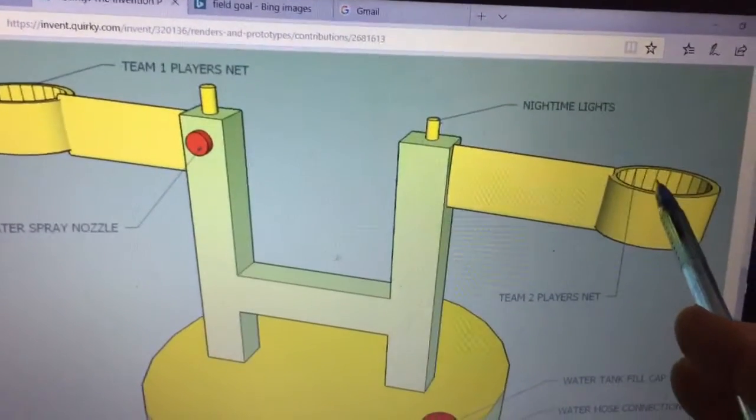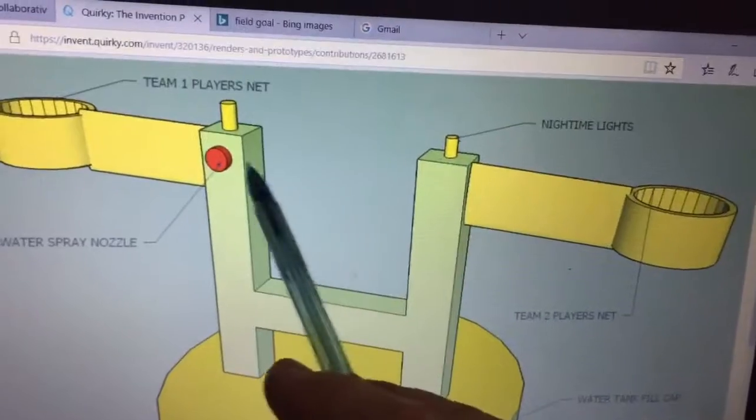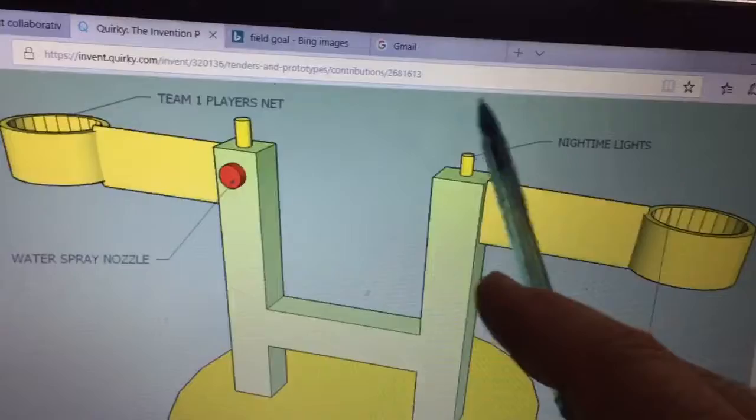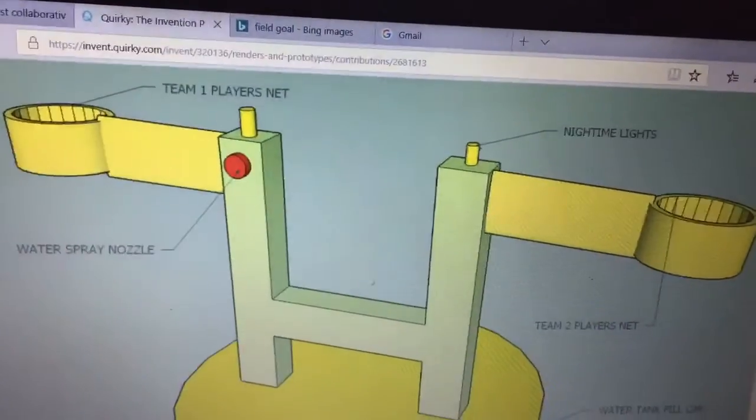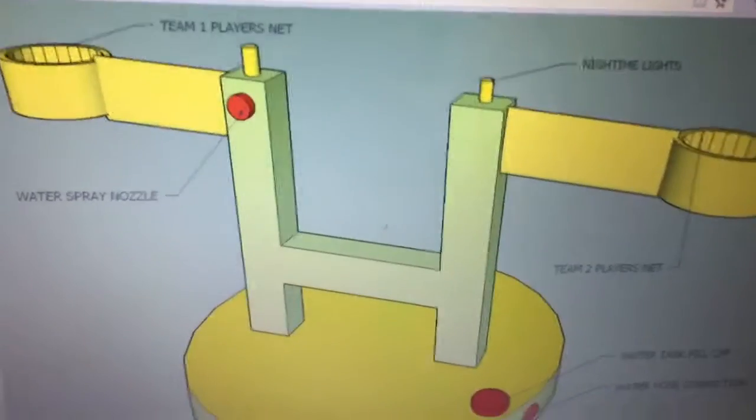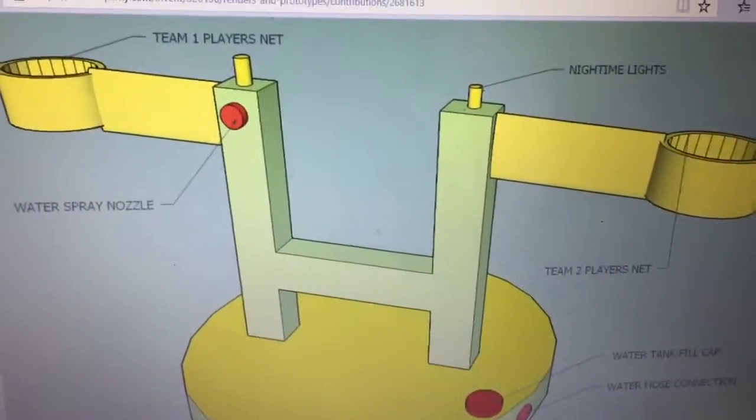Once the net is full, the lever will go down and it'll activate Team B's water spray nozzle and spray water all over them. It'll be lots of fun and laughter watching them get soaking wet. But it's a great game to get the kids outside. It's a lot of outdoor fun and activity.